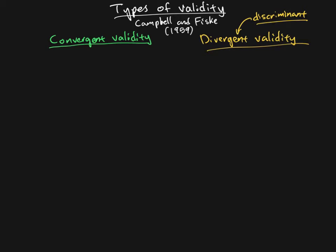So, convergent validity. The book gets into some details about how you would go about showing convergent and divergent validity, but what I want to do here is give you the overall concept — a real intuitive feeling for what it is we're trying to do. The overarching idea is we're trying to make sure that our measure is measuring what we hope and claim it's measuring, and not something else instead.